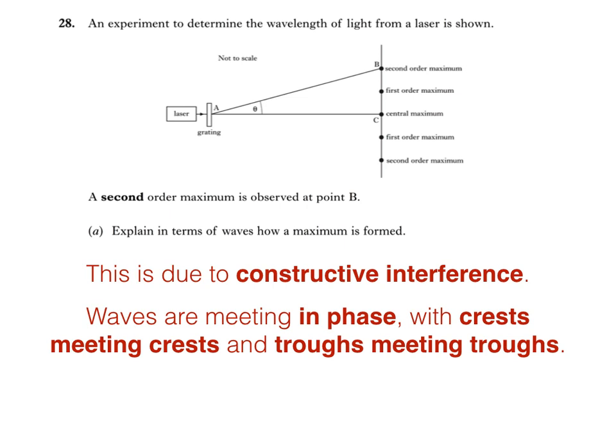A similar interference pattern would be observed if the grating was replaced with something called a Young's double slit. This creates two coherent sources of light — in other words, with the same frequency and a constant phase difference. We can explain the production of maxima in terms of the path difference: the difference in length between the first path length, say between the first slit and the maximum being observed, and the second path length.